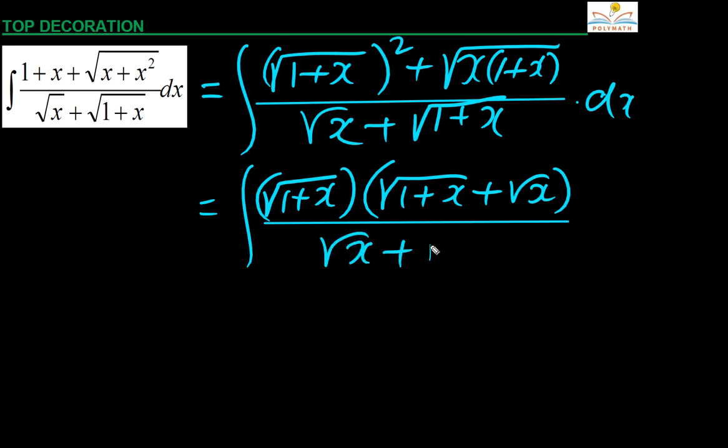So it can be clearly seen the numerator and denominator have common factors, and that term gets cancelled. Thereby, you can see that root over 1 plus x is remaining.